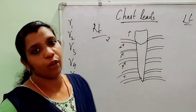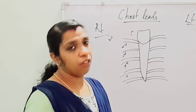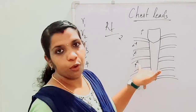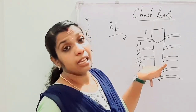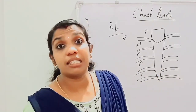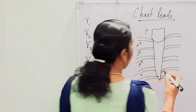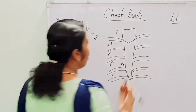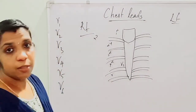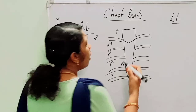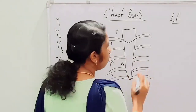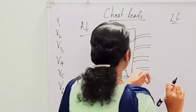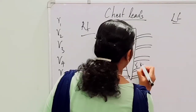The first lead is V1. The lead V1 is placed in the fourth intercostal space near the right sternal border. So we will be keeping V1 here. Next is V2. V2 is placed in the fourth intercostal space at the left sternal border.